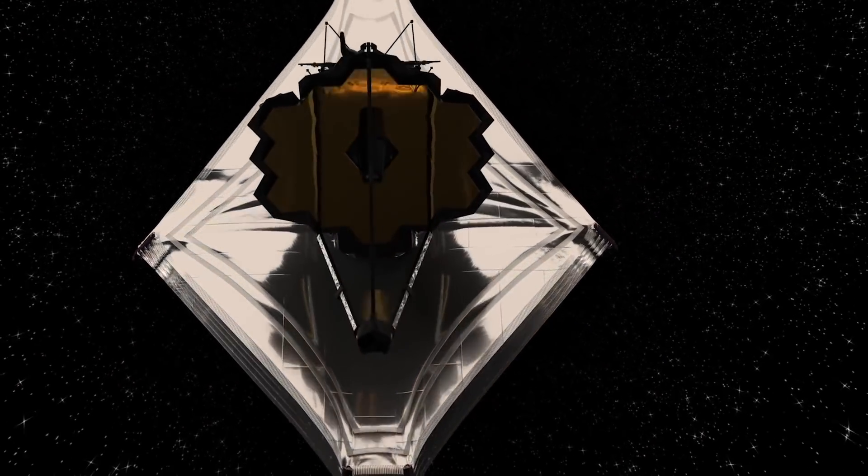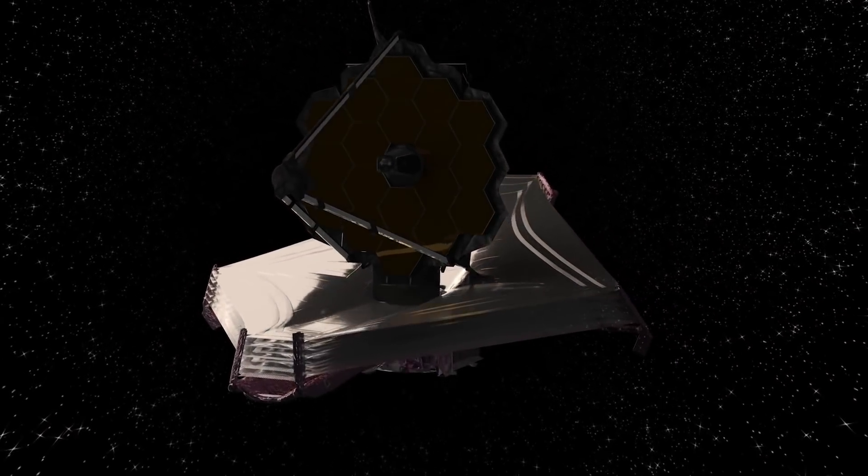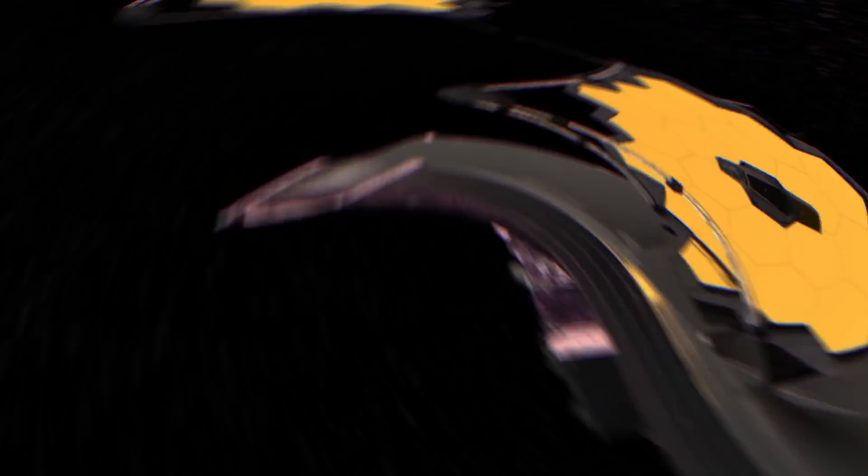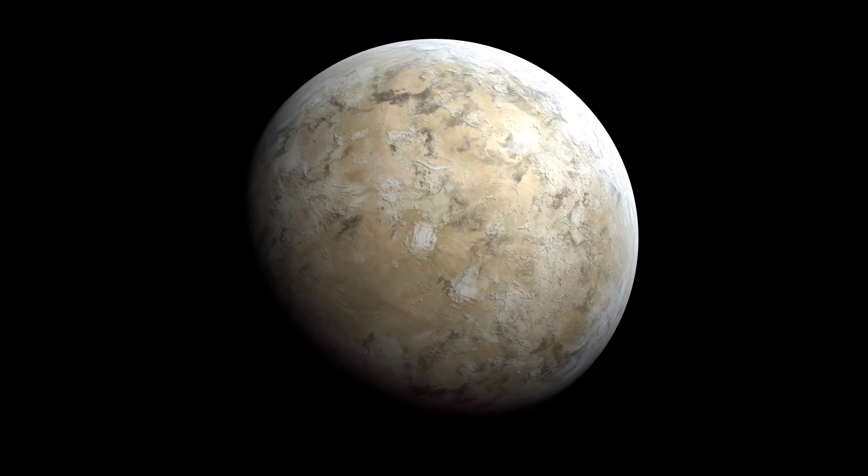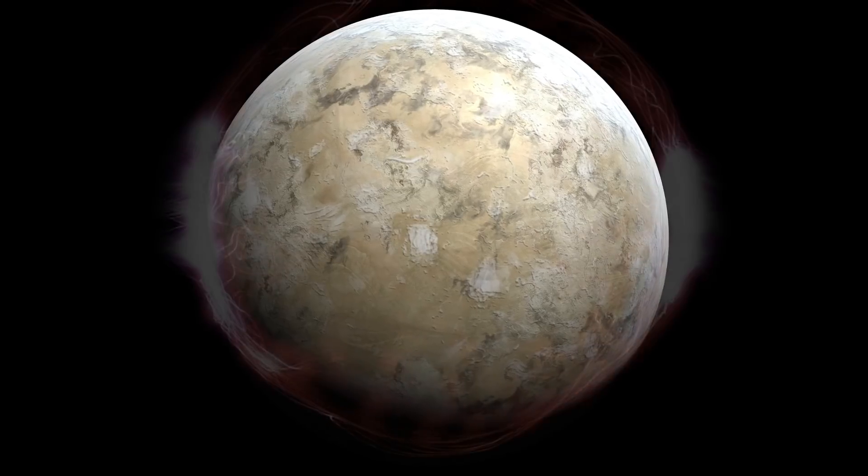Although the James Webb Space Telescope is not really an exoplanet hunter, with its 6.5 meter diameter primary mirror and infrared spectroscopy instruments, it is perfectly suited to peer more closely at distant worlds, telling us what they are made of and, potentially, if there are signs of life in their atmospheres.